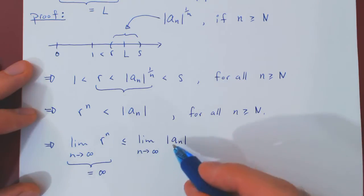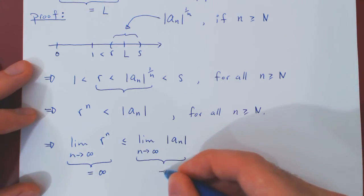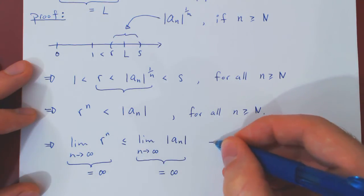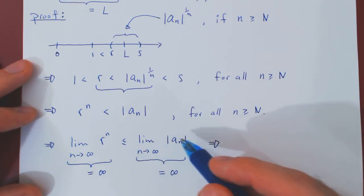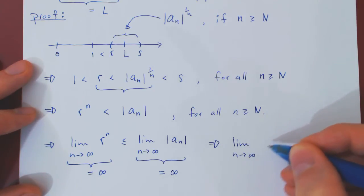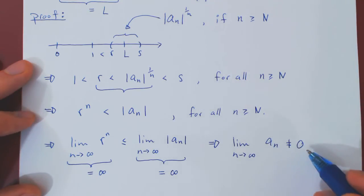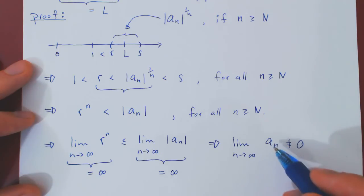But if this limit is at least as big as infinity, it must be equal to infinity itself. But now think about it. If the limit of a_n in absolute value is equal to infinity, clearly the limit as n tends to infinity of a_n cannot be zero. If a_n approached zero in the limit, so would its absolute value. It's clearly not the case, and so the limit of a_n as n tends to infinity is not zero.